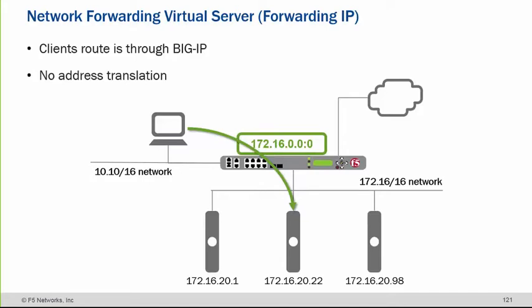I want that any 10 network cannot access 20.22. It can access all other IPs, but I do not want it to access 20.22. Is that possible? Yes, with the forwarding virtual servers it's possible.